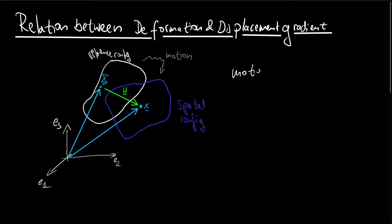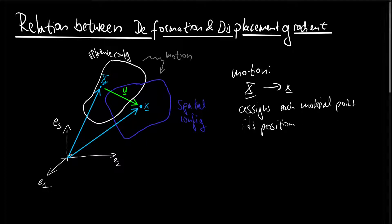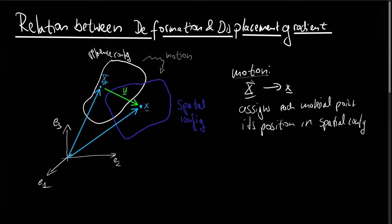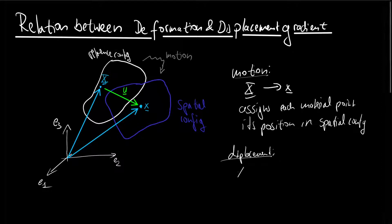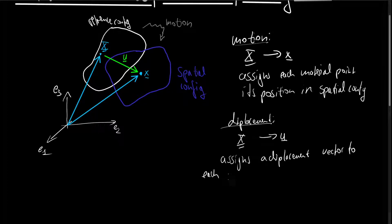Let us recall what a motion was. A motion was a mapping from a capital X to a smaller x, so it assigns each material point its position in the spatial configuration. We can equally describe the motion by the help of the displacement. The displacement was a function mapping capital X to a vector U, and it assigns a displacement vector to each material point in the reference configuration.